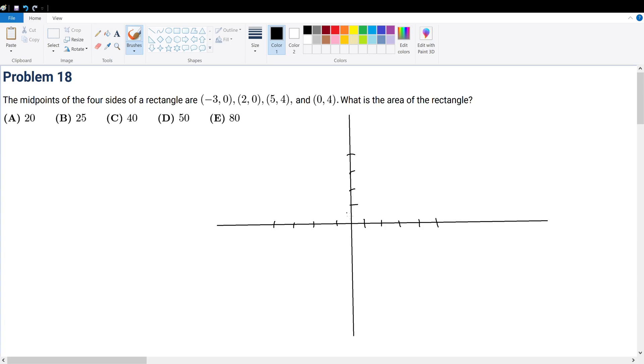Problem 18. The midpoints of the four sides of a rectangle are (-3, 0), (2, 0), (5, 4), and (0, 4). What is the area of the rectangle?